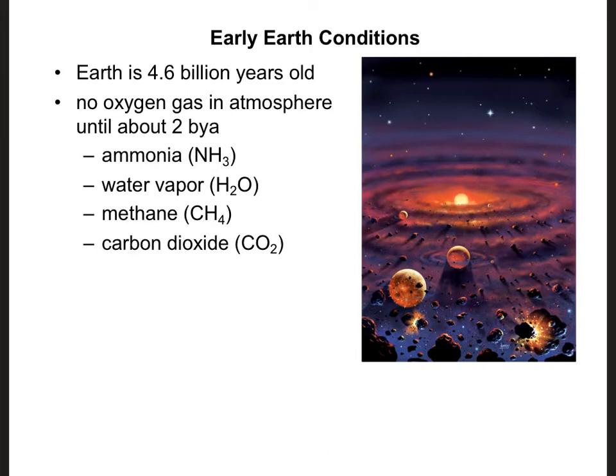There were some gases in the atmosphere like carbon dioxide, ammonia, water vapor, and methane gas, but there was no oxygen gas yet. That didn't come around until after life had already started, because it was actually the first photosynthetic bacteria that were the ones who added oxygen to the Earth's atmosphere.